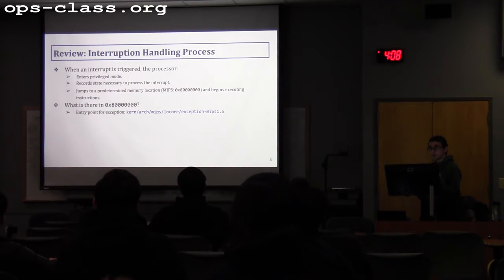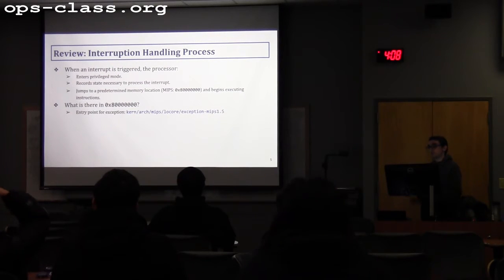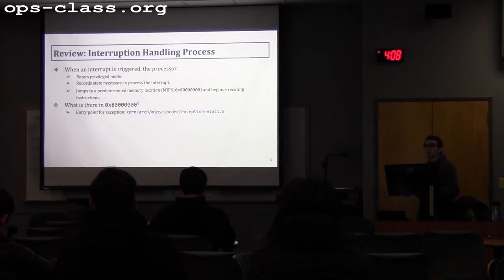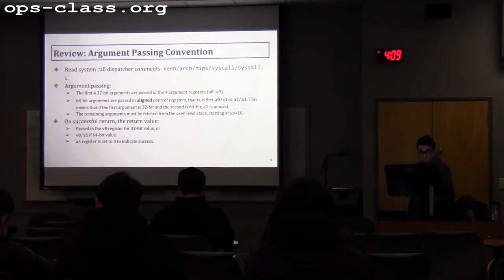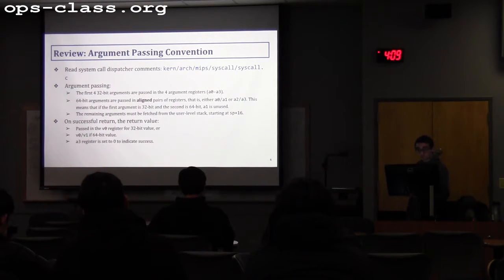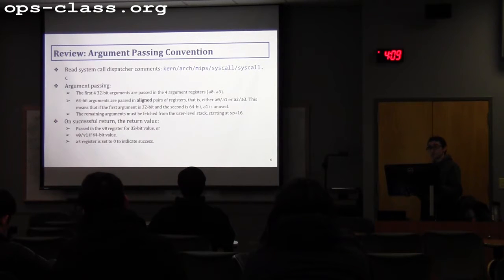We also mentioned how the interrupt handling process works. Once an interrupt happens, the system enters privileged mode, records the state, and jumps to a predefined address at 0x80000000, which is where kernel space starts. We also mentioned the convention between user space and kernel space: if the user wants to pass arguments through system calls to the kernel, they must place these arguments in the first four registers. If the arguments are 32-bit, they go in A0, A1, A2, A3.